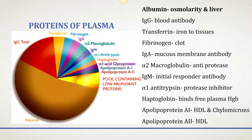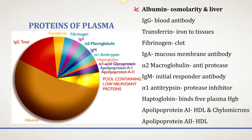Looking at the different proteins found in plasma, about 7% of the liquid portion of the blood contains different types of proteins. The major protein is albumin, which is produced by the liver, so we can measure albumin levels as an estimation of liver function.